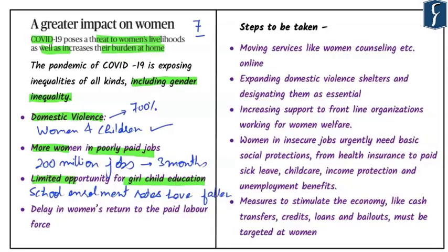The fourth impact is a delay in women's return to the paid labor force. COVID-19 has led to a huge increase in care work due to school closures and increased needs for elderly people. Women will not be in a position to get back to their main jobs, and as and when they are willing to join jobs, they will not get as much as they were getting earlier.